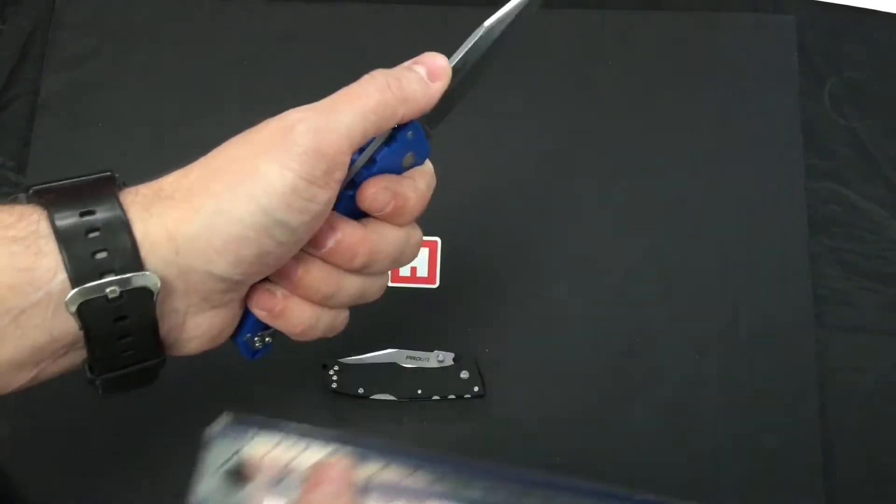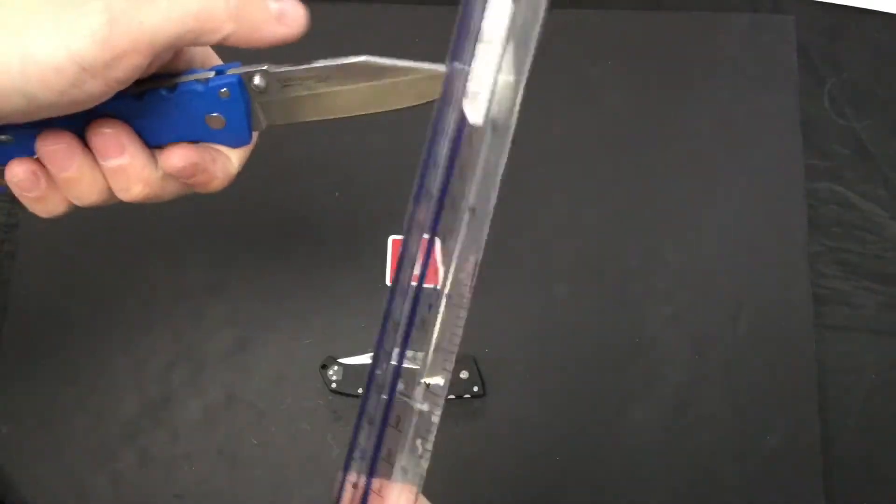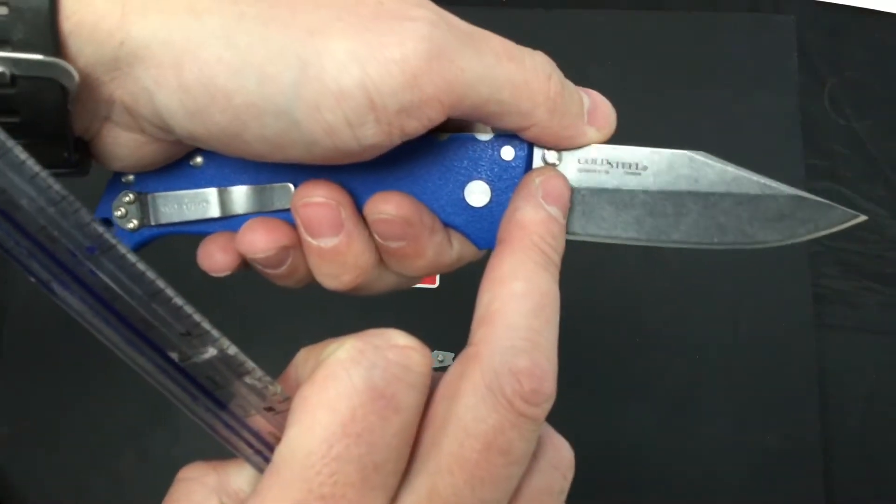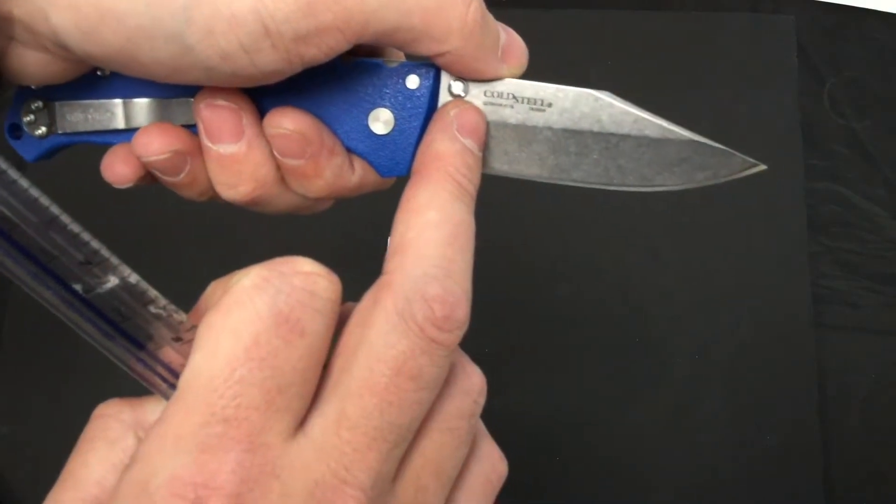We've got 3mm on the back spine of that clip pointed blade, and it is German 4116 cutlery steel.